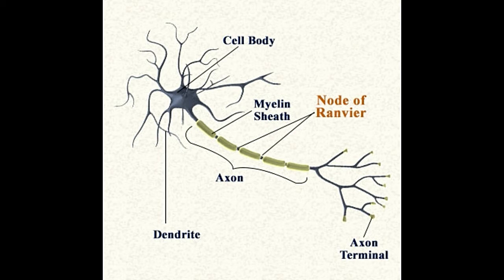Each node is approximately one micrometer long. To learn the function of these nodes, it's essential to know the complete process of impulse transmission of a neuron. A neuron receives a signal from another neuron in the form of chemical neurotransmitters. These are produced by the terminals of the conducting neuron and are received by the dendrites of the next neuron. A structure called synapse facilitates this process. Once received, the neuron converts the chemical neurotransmitters to an electrical impulse. This impulse travels along the axon to the terminals, and is passed on to the next consecutive neuron in the same way.